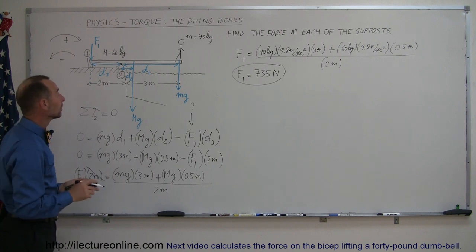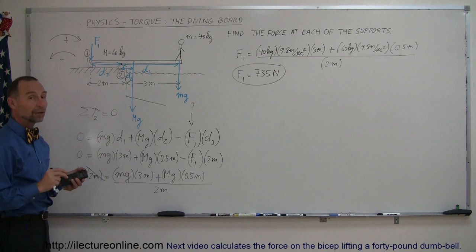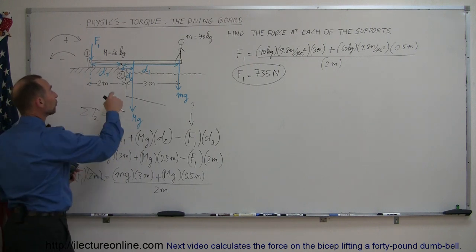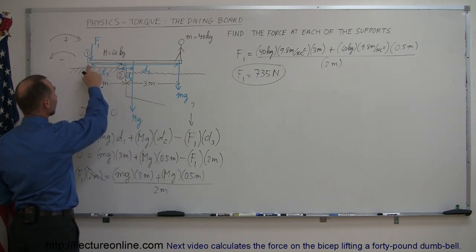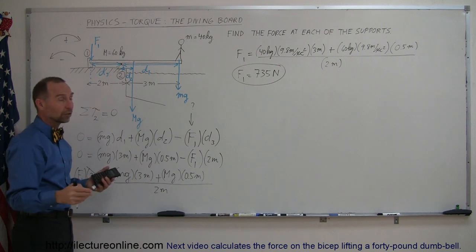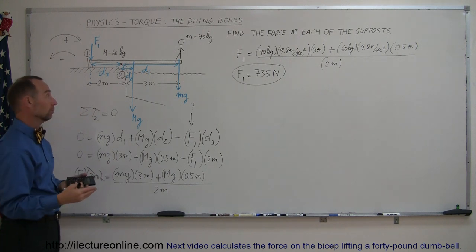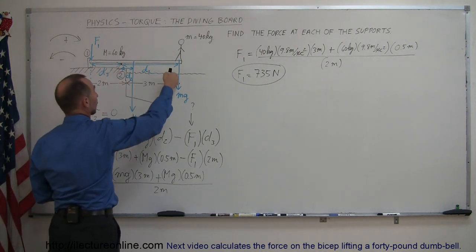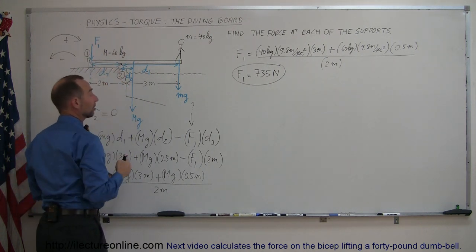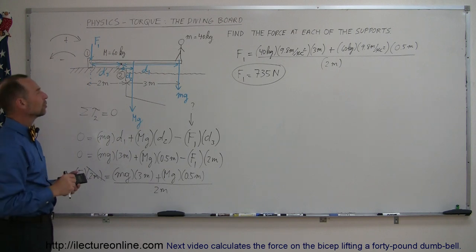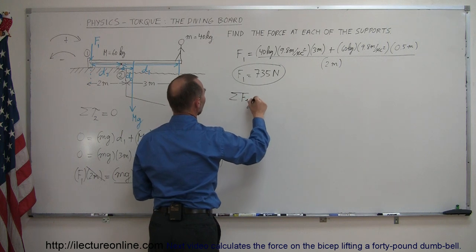Now we need to find the force on the second pivot point. One way is to move the pivot point there and redo the problem. Or, more simply, we can say the sum of all forces in the y-direction must add up to zero: the weight of the board plus the weight of the person plus the force pushing down at support 1 must equal the force pushing up at support 2. That's the easiest method, so I'll use that: sum of all forces in the y-direction equals zero.